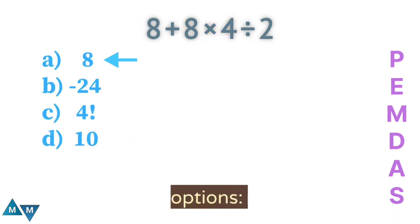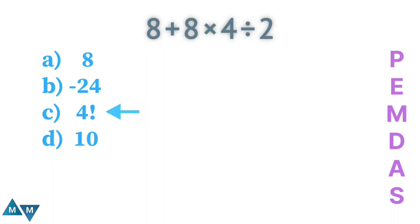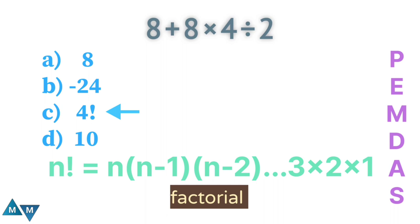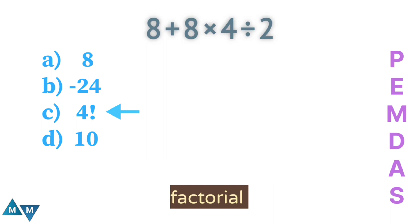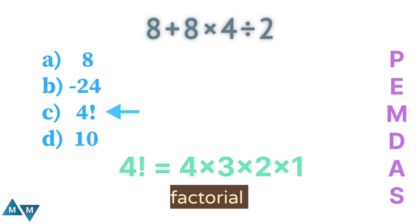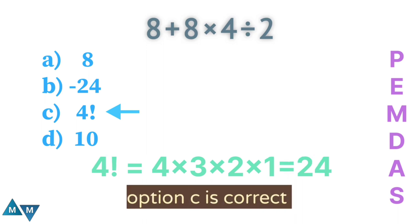The expression becomes eight plus 16, which equals 24. Looking at the options: the first — eight — is incorrect. The second — minus 24 — is also incorrect because our answer is a positive number. The third option is four factorial. When a number has an exclamation mark after it, we call it a factorial. Four factorial equals four times three times two times one, which gives 24. So option C is our final answer.